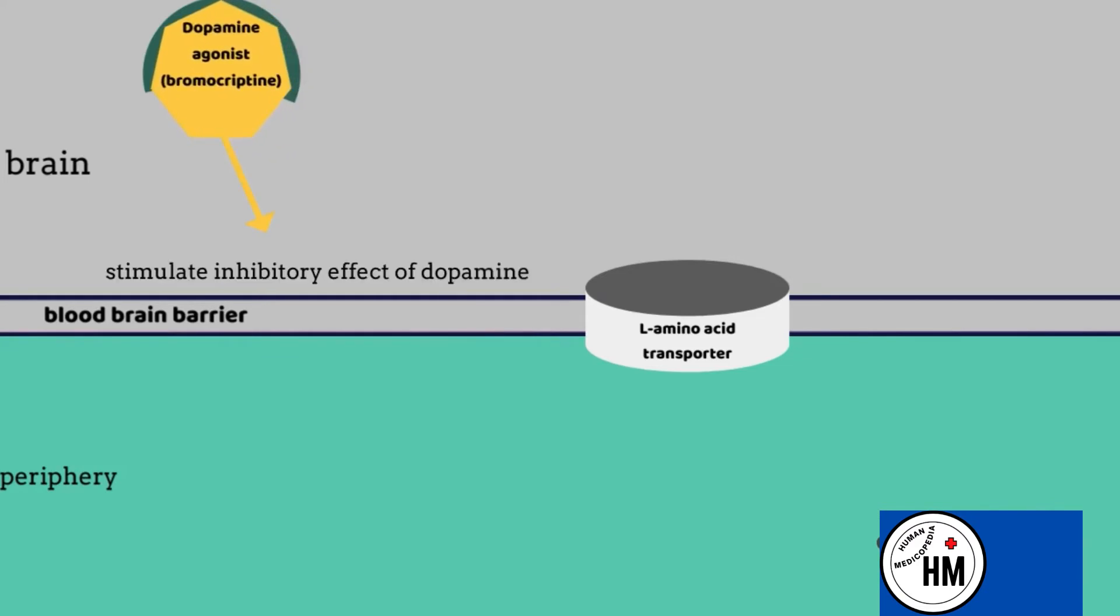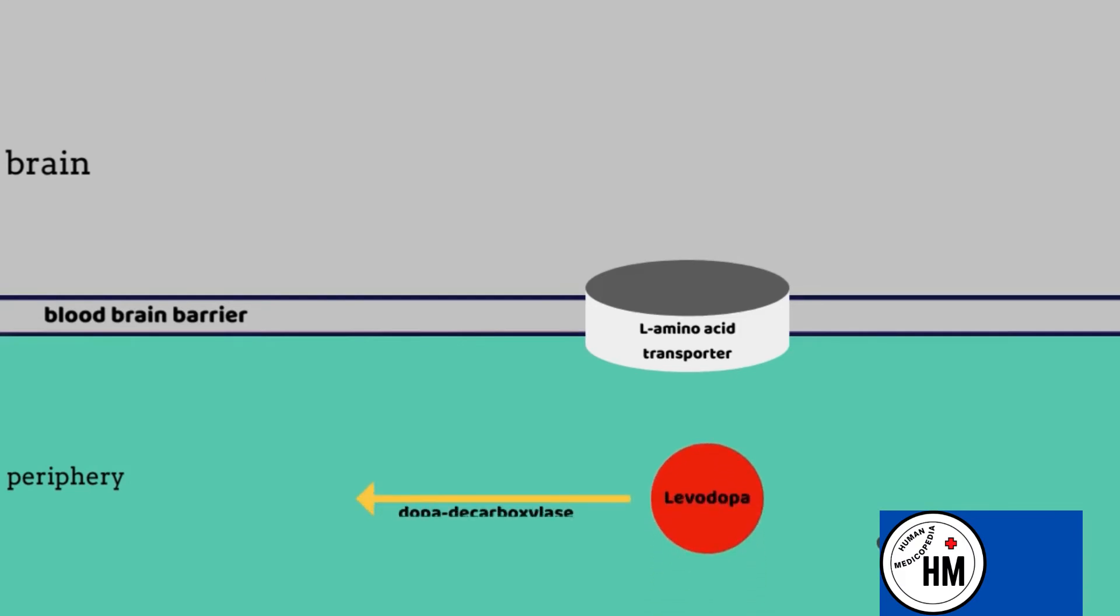Levodopa is given with carbidopa, a drug that does not cross the blood brain barrier but inhibits dopa decarboxylase in peripheral tissues. You can see that levodopa can be converted to dopamine by dopa decarboxylase enzyme and cause peripheral adverse effects. But with combination of carbidopa, it does not let this happen and hence prolongs the half-life of levodopa.